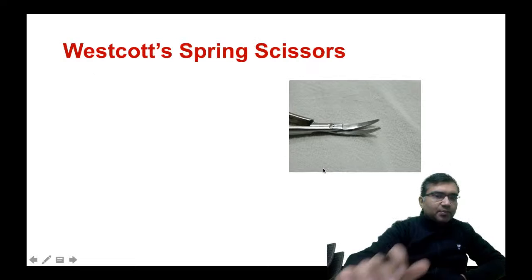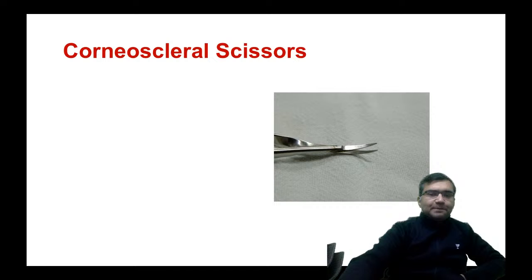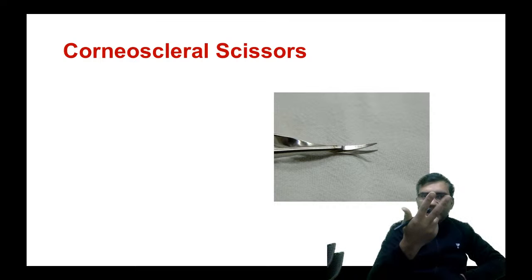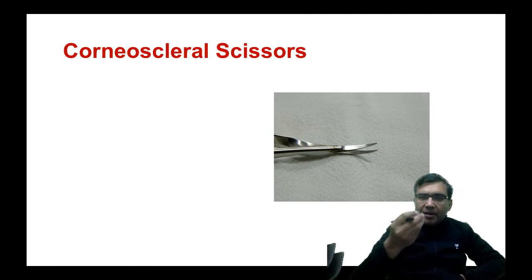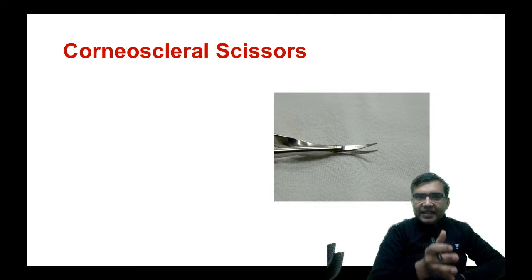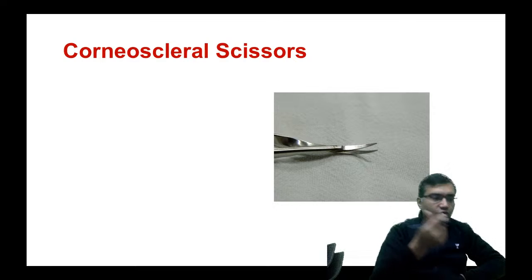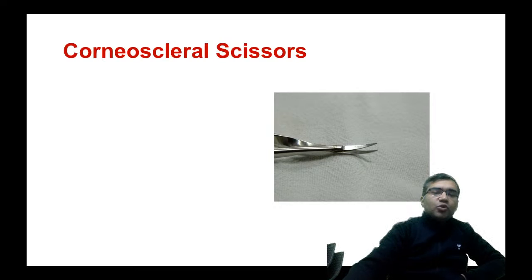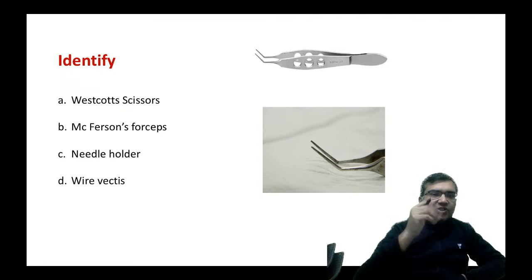As tissue gets bigger and stronger, we need a bigger scissor. In the size hierarchy: the smallest is the Westcott scissor, then the corneoscleral scissor, and the largest is the conjunctival scissor. For cornea and sclera you use the corneoscleral scissor, for suture cutting you use the Westcott, and for cutting conjunctiva you use the conjunctival scissor.